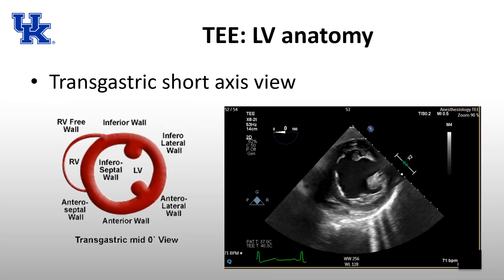We've talked about coronary blood supply and identified all walls of the ventricle. Looking at this intraoperative echo case, there is global hypokinesis, but the worst wall is the inferior wall — the wall closest to the top of the screen, closest to the TEE probe. The coronary artery that usually supplies the inferior wall is the PDA, which 70% of the time comes from the RCA. This is an example of how this knowledge is useful clinically and how it might show up on a test question.